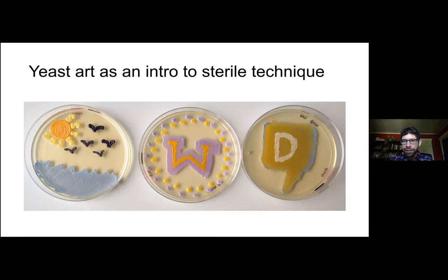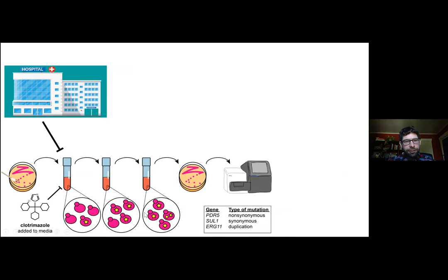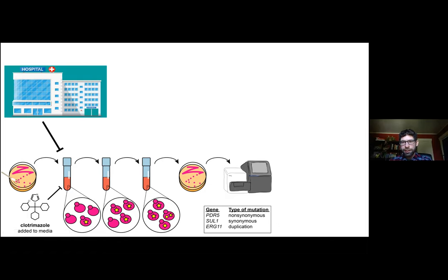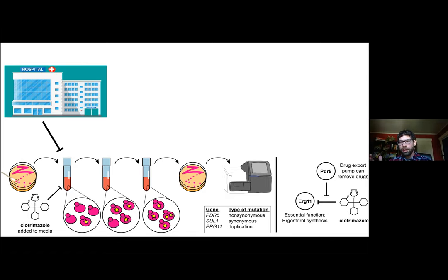The students carry out this evolution experiment. At the end of it, I take clones from their experiments and sequence them using whole genome Illumina technology. I identify mutations that occurred during their experiments and send back a lightly curated list so students can carry out a literature search to figure out what these genes do. Then together we start to build models of how the function of those genes relates to the drug resistance phenotype we're selecting for.